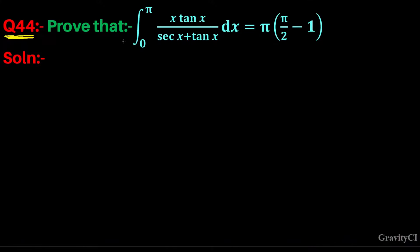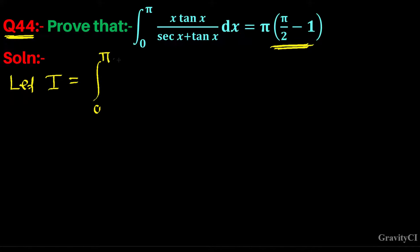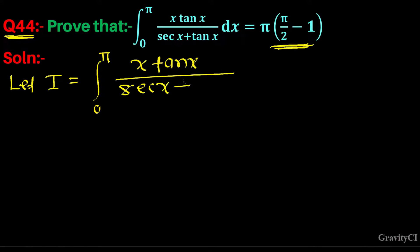Question number 44: prove that integral from 0 to π of x·tan x / (sec x + tan x) dx equals π(π/2 - 1). First, let I equal to integral from 0 to π of x·tan x / (sec x + tan x) dx. Suppose this is equation one.